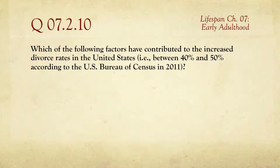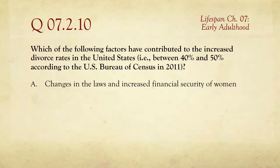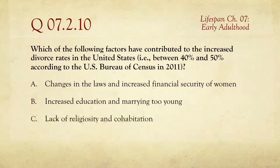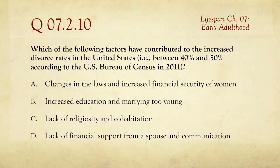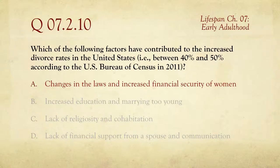The last question: which of the following factors have contributed to the increased divorce rates in the United States — between 40 and 50 percent, according to the U.S. Bureau of Census in 2011? Choices are: A, changes in the laws and increased financial security of women; B, increased education and marrying too young; C, lack of religiosity and cohabitation; or D, lack of financial support from a spouse and communication. The answer is A — changes in the laws, such as no-fault divorce, and increased financial security of women have both contributed to increased divorce rates.